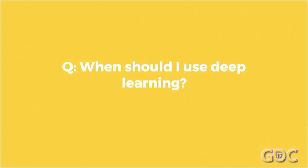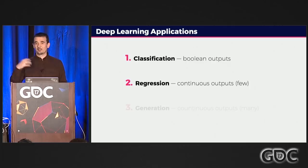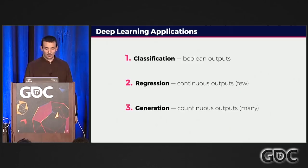So when should you use deep learning? The simple answer is it's the same as machine learning in general — whether you're doing a classification problem, predicting output classes (this is a cat, a dog) based on input x like an image, or a regression problem, which is predicting continuous values y from the same input x. Then, as a special case, generation is sort of predicting very large images based on very small inputs. That's one area where deep learning is also shining, and one of my favorite applications.